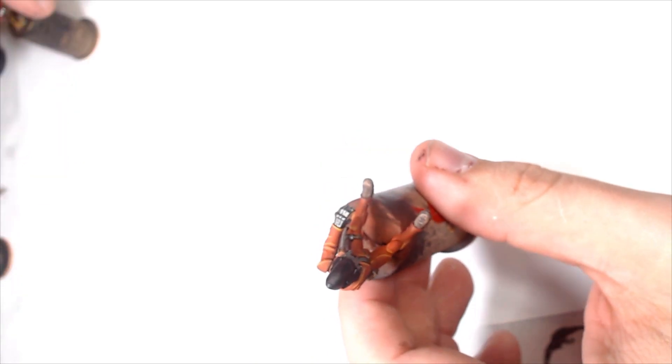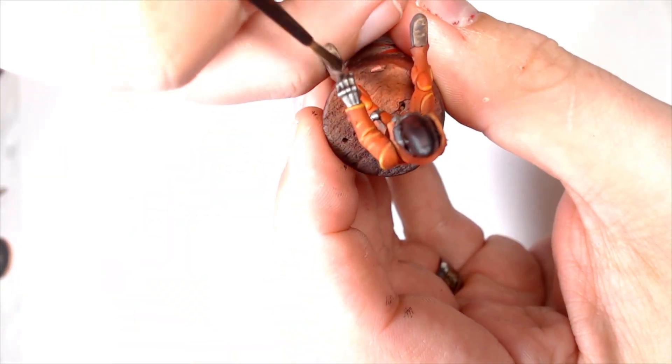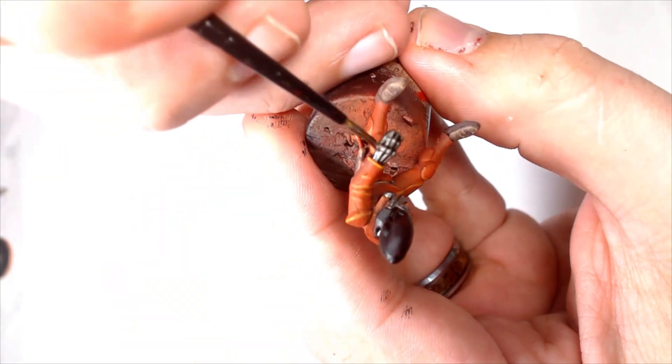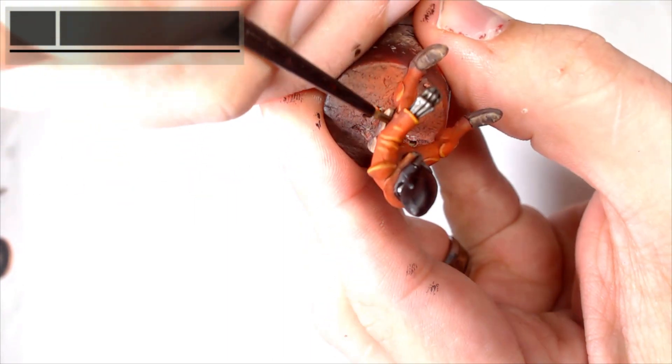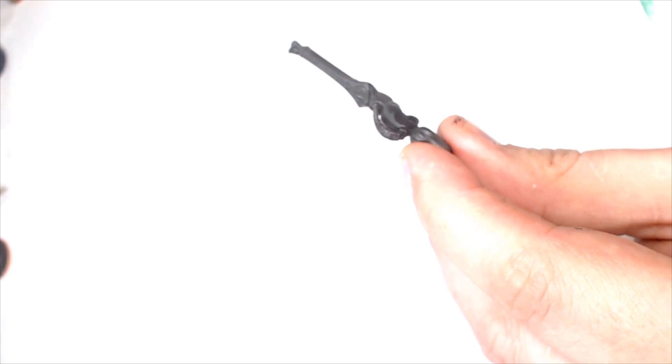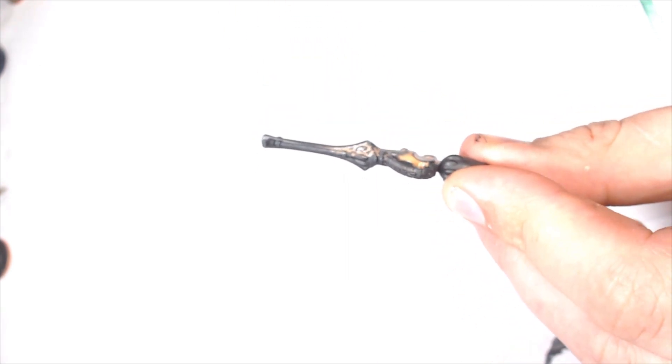So after a couple of layers of the Lead Belcher, thin down some Nuln Oil, getting it all over any of the metal work, even the belt buckles, everything like that. Really making sure that these metals get the quality of coverage that you want.